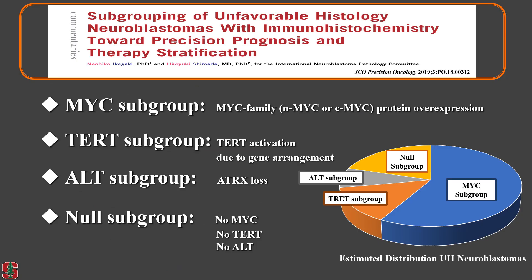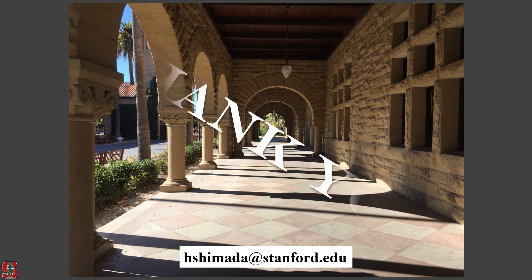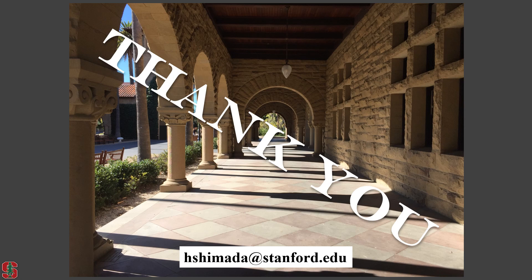In summary, we now have four subgroups in the unfavorable histology neuroblastomas: the MYC subgroup, the TERT subgroup, the ALT subgroup, and the NOW subgroup. We know the targets for the first three subgroups — MYC, TERT, and ALT. We are hoping that most tumors in the NOW subgroup could respond nicely to the currently available high-risk protocol. Thank you very much for listening. If you have any questions or suggestions, please send me an email and I will try my best to answer.